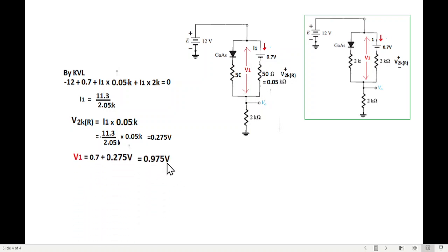So v1 is 0.975 volt. Now 0.975 volt appearing here which will not turn on this gallium arsenide because the gallium arsenide requires 1.2 volts. So in this case this diode will not turn on.